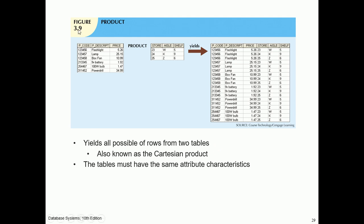For PRODUCT: the product of two tables yields all possible combinations of rows from the two tables — also known as the Cartesian product. The tables must have the same attribute characteristics.